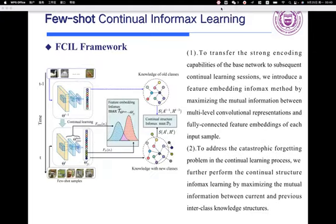This is the FCIL framework. To transfer the strong encoding capabilities of the base network to subsequent continual learning sessions, we introduce the Feature Embedding Informax. We introduce Feature Embedding Informax by maximizing the mutual information between multi-level convolutional features and fully-connected feature embeddings of each sample.